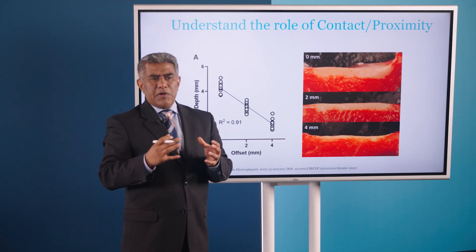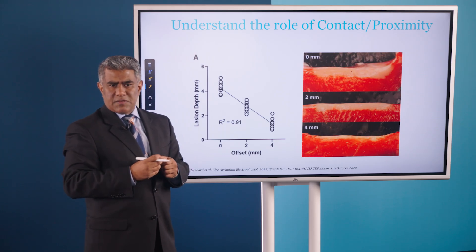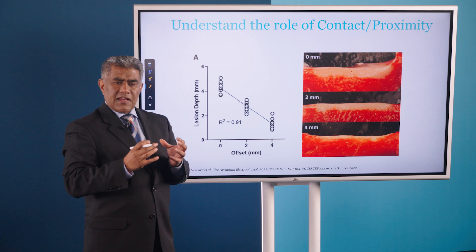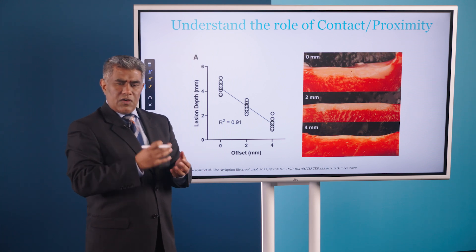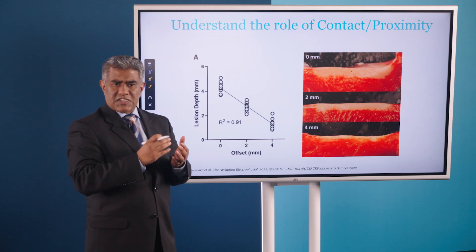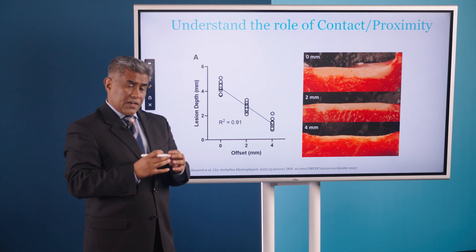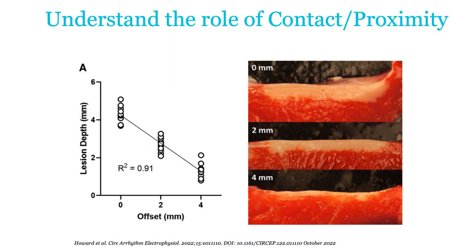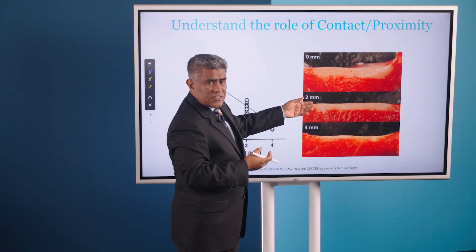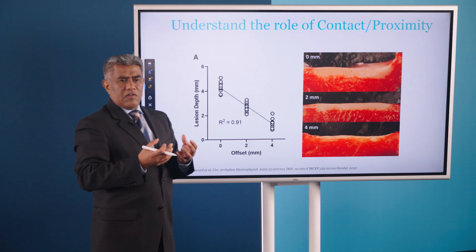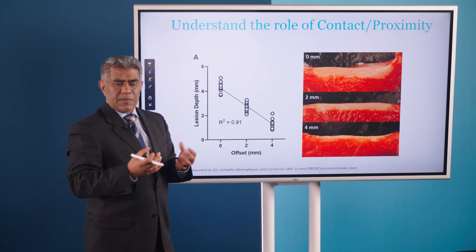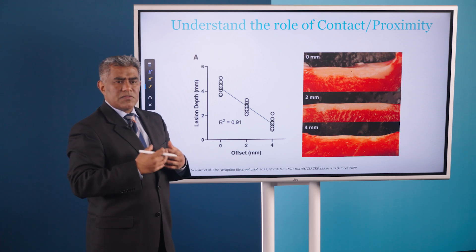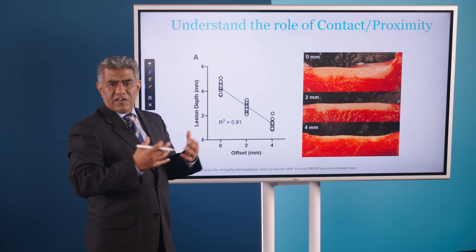An important thing that everybody always asks about pulse field is: what is the role of contact and proximity? The way to understand how pulse field is different from thermal ablation, which really depends on contact and duration of stable contact, is that pulse field, because it ablates using electric field, is not contact-proximity dependent. As Howard et al. show in this paper, even with the catheter offset from the tissue — even with a two-millimeter offset — you still can make a lesion. But when we want to make good lesions in the beating heart, it's very important that we get stable contact because most of our technologies aren't designed to make very large lesions.